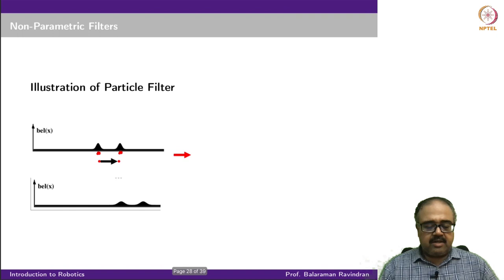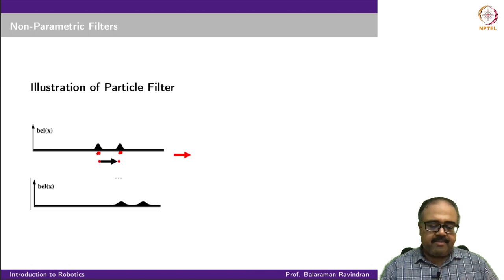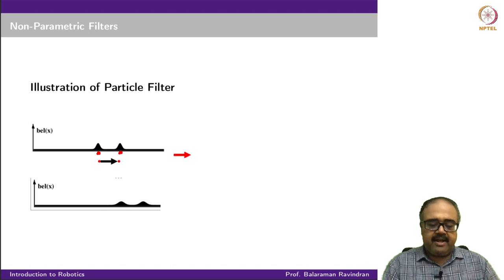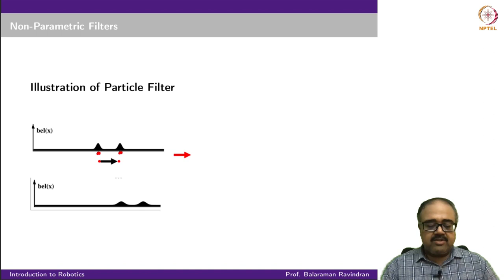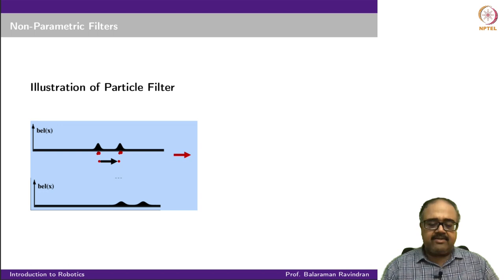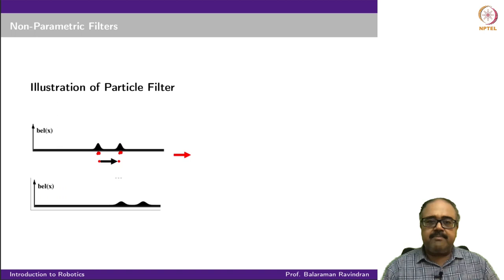After moving particles forward based on the action, we end up with a new belief distribution — the two modes have shifted right. The distribution is slightly flattened compared to before because there is noise in the movement: a particle does not always move the same distance, resulting in a spread of uncertainty around the endpoint. This smearing of particles explains why the distribution looks more flat.